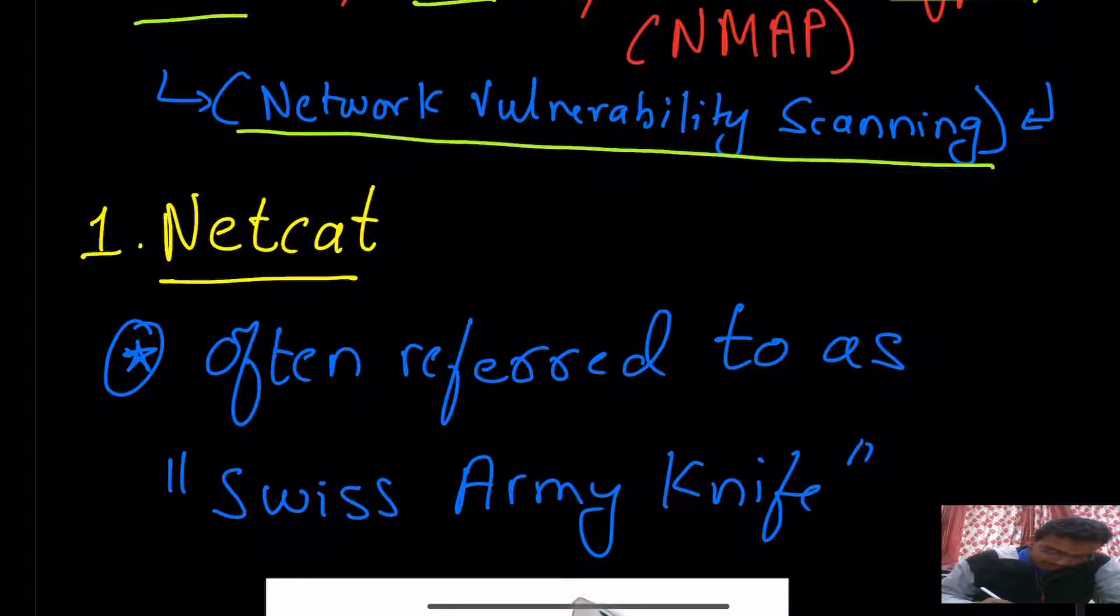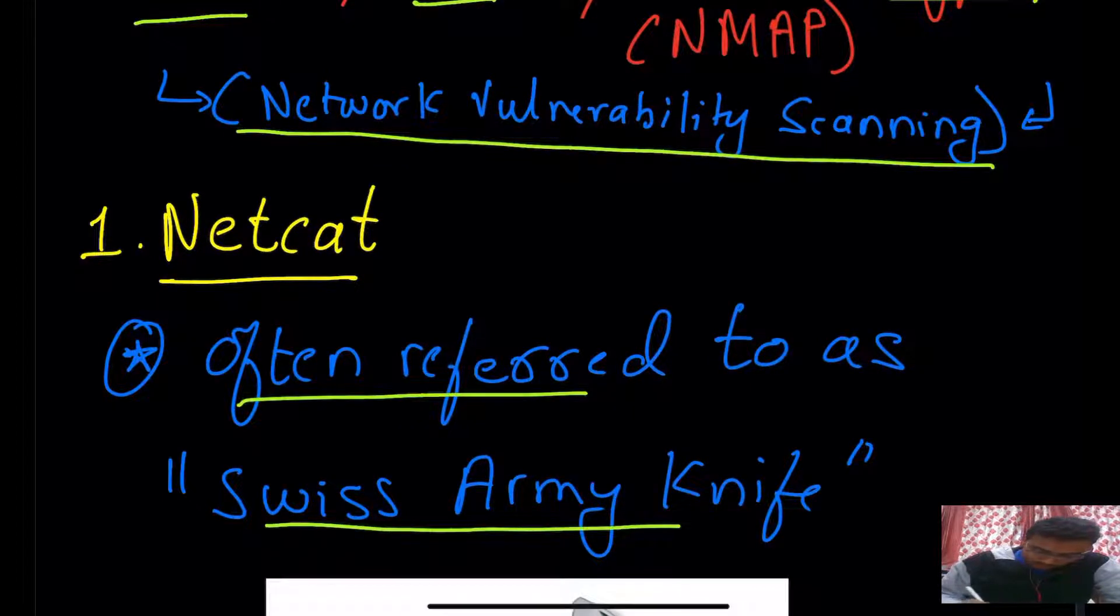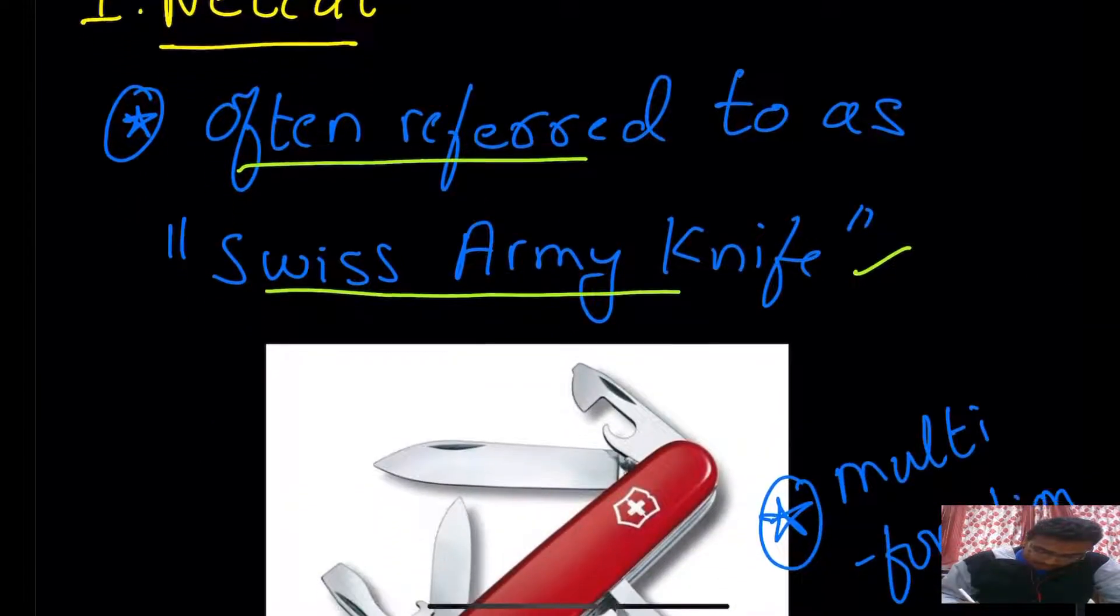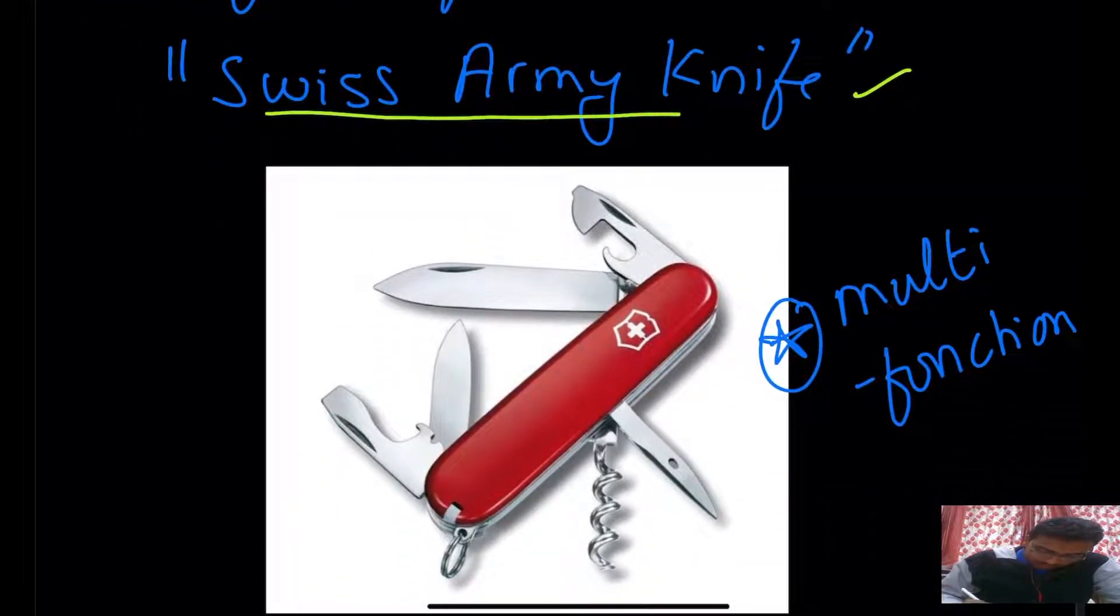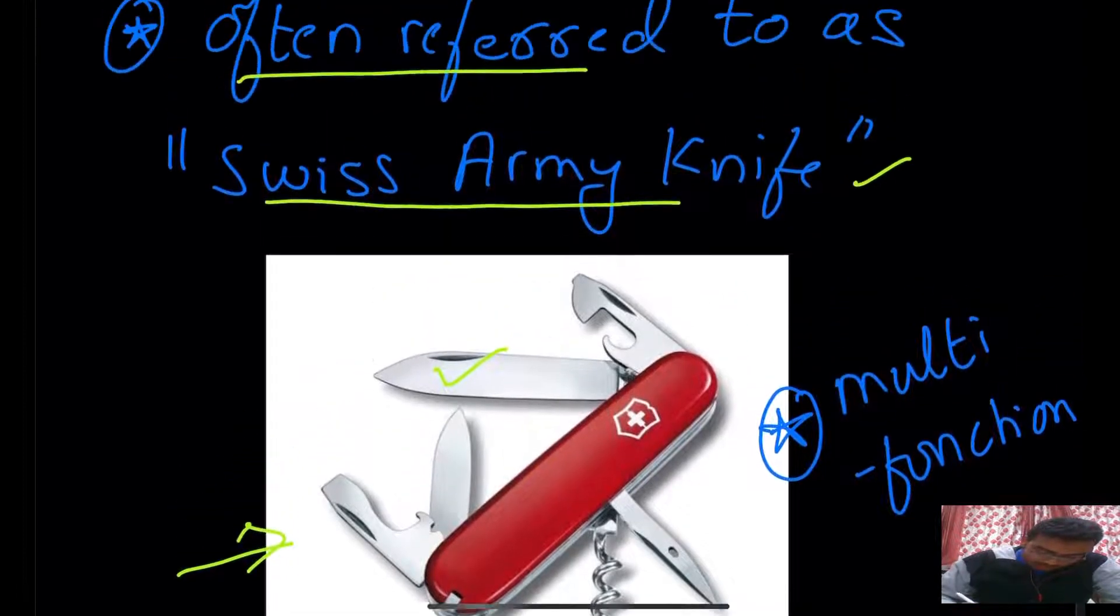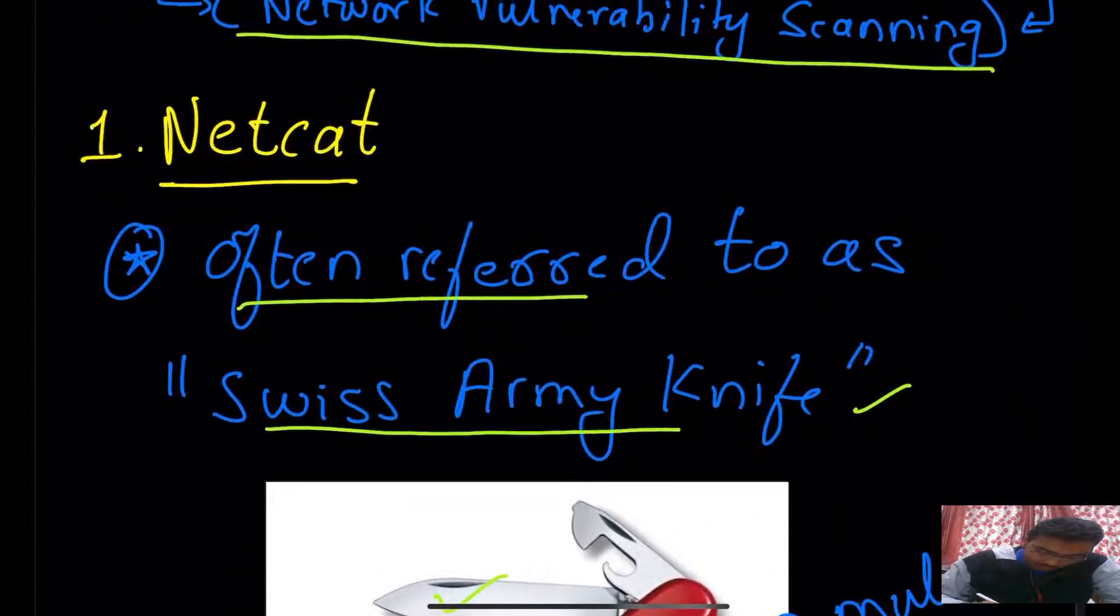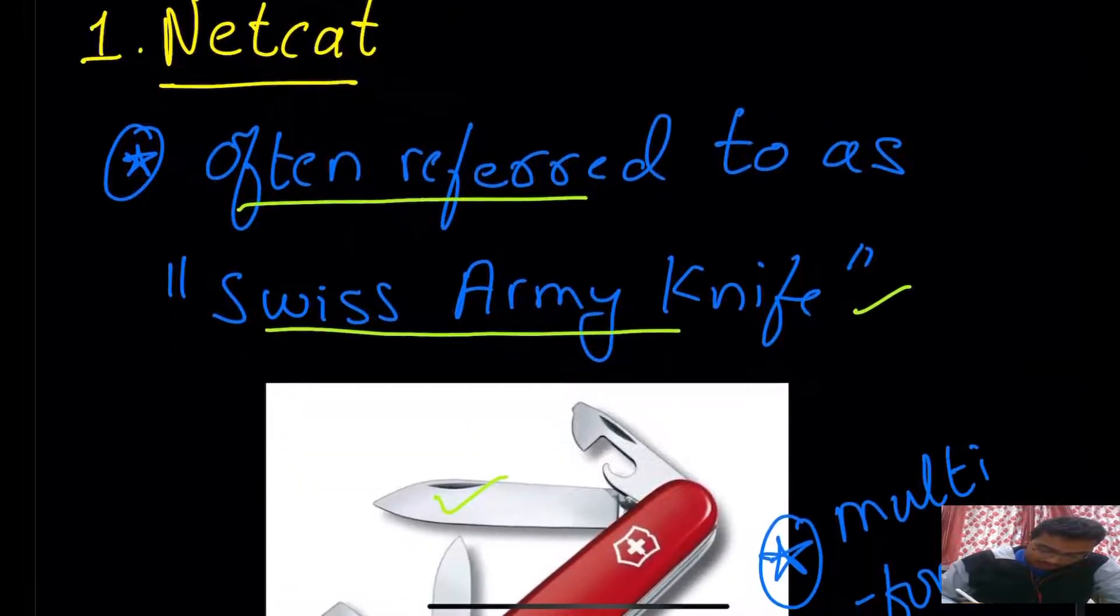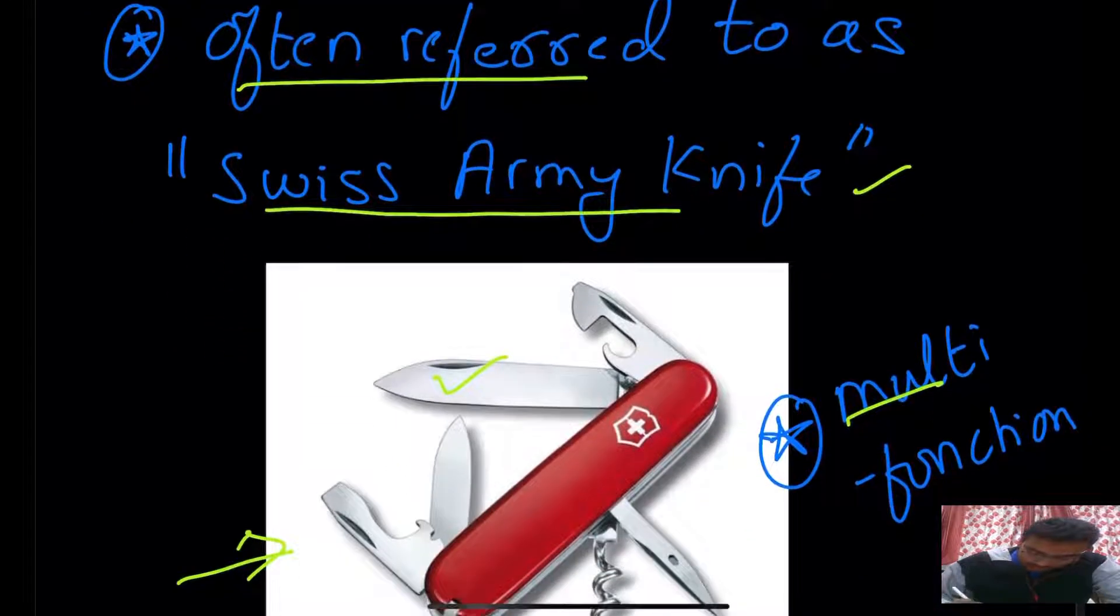First, what exactly is netcat? It is often referred to as the Swiss Army knife. Why Swiss Army knife? A Swiss Army knife looks somewhat like this. Apart from the knife, you have other utilities like a scissor, a screwdriver, a bulb. Many such utilities are present in just one knife, and that is the reason it is compared to a Swiss Army knife because of its multi-functionality.